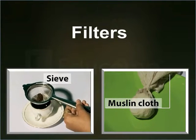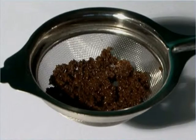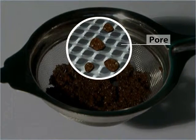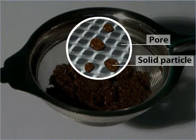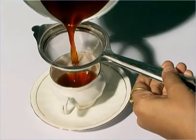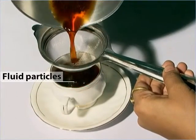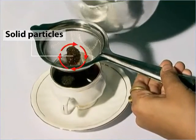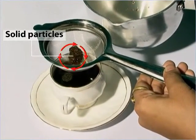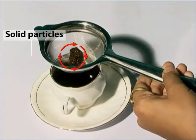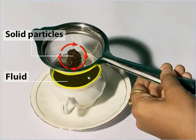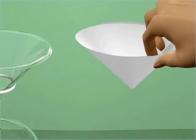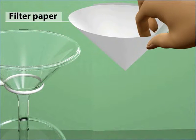Always remember that the pore size of the filter should be smaller than the solid particles but bigger than the fluid particles. As a result, the fluid particles pass through the filter, leaving the solid particles retained on the filter itself. Thus the solid particles get separated from the fluid.